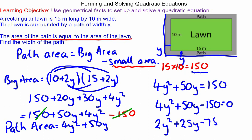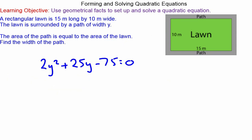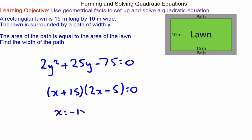To solve this quadratic we can factorize: (y + 15)(2y - 5) = 0, giving y = -15 or y = 5/2. Since you can't have a negative length, the length of the path must be 2.5 metres.